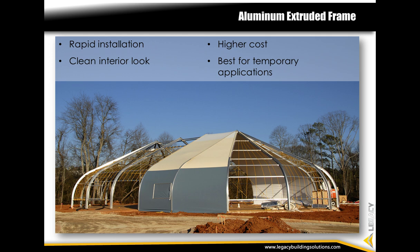Aluminum extruded frames are more substantial than single tube arches and create good-looking, portable structures, though they can also be used as more permanent structures. The buildings are designed for rapid installation with a clean and neat interior look. Because of their appearance and high life cycle cost, they are most popular as rental shelters and on construction sites to temporarily store materials and equipment. Established frame sizes that can be reused are more economical than custom aluminum extruded frames. Aluminum is limited in its ability to handle wide spans and environmental loads, which limits potential uses as permanent structures.